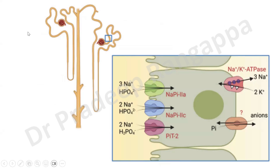Phosphorus is both secreted and excreted from the kidneys. All this happens from the proximal convoluted tubules, where various transporters facilitate phosphate entry into and out of the cell. This briefly summarizes how the absorption and redistribution of phosphorus happens in the body.